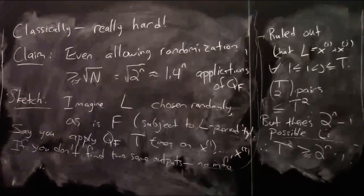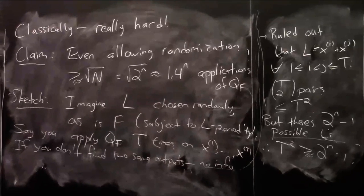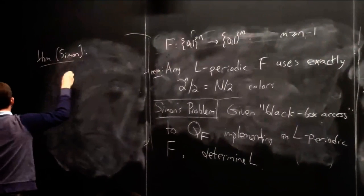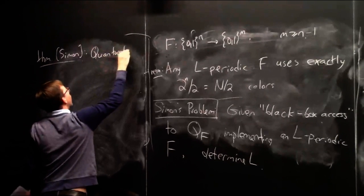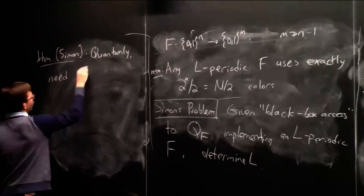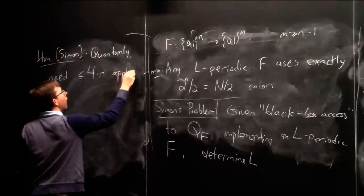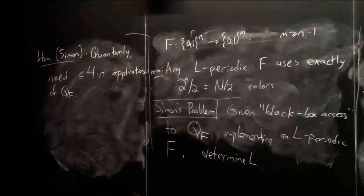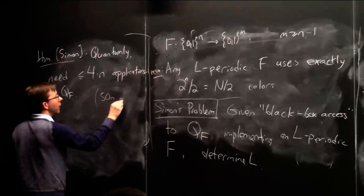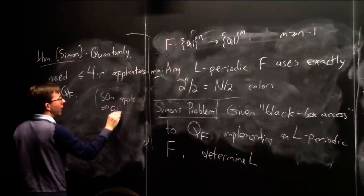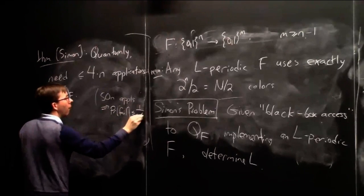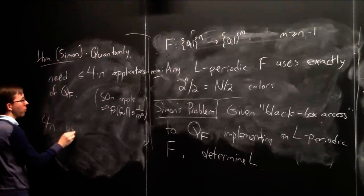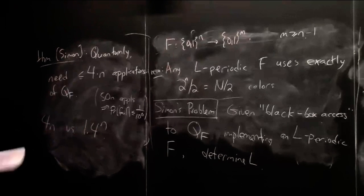But Simon is going to do it much more efficiently. Simon's theorem: quantumly, you only need roughly 4N — that is, 4 times little n — applications of QF, in expectation. Or if you do about 50 times n applications, the probability of failure is less than one in a million. So we have 4n versus 1.4^n: this is an exponential quantum advantage.